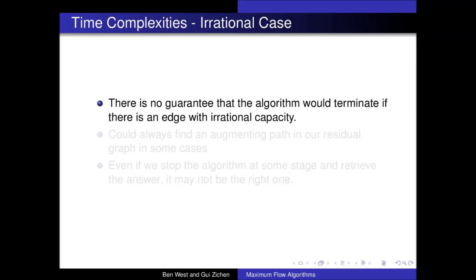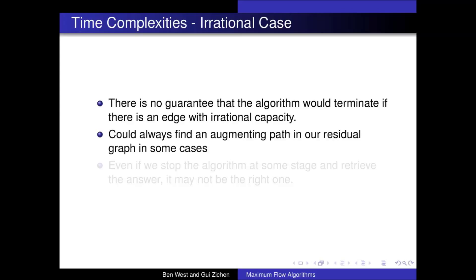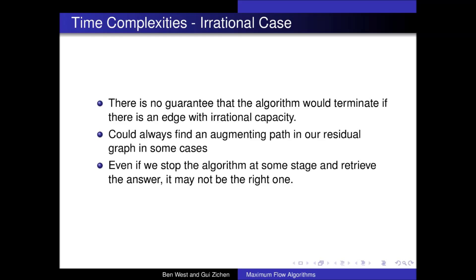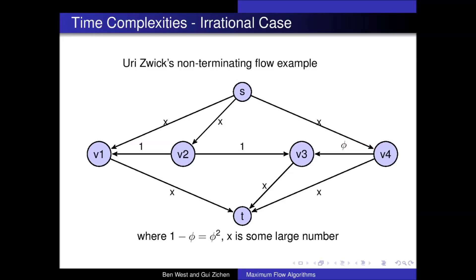Interestingly, the Ford-Fulkerson algorithm may not terminate if there is an edge with irrational edge capacity. This is because we could always have an augmenting path in a residual graph with irrational edge capacity, with a bottleneck edge capacity converging to zero but never equaling it. If we try to stop the algorithm at some stage and retrieve the answer, it may not even be close to the actual maximum flow. The classic example of such a case is shown. Due to time constraints, we will not demonstrate it here. However, you can read the details of this example in the link in the video description.